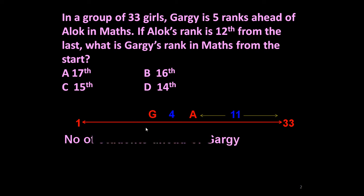So just let us see, number of students ahead of Gargi = 33 - 11 - A - 4 - G = 16. So 16 girls are on this side, means Gargi's rank is 17th from the beginning.